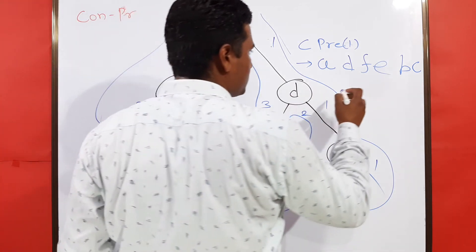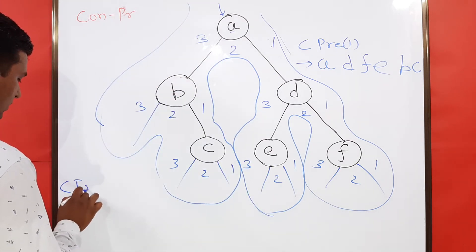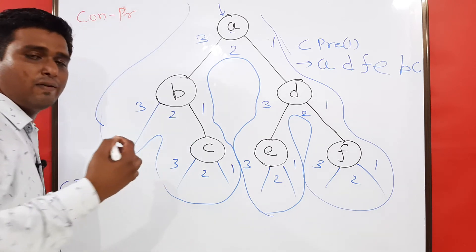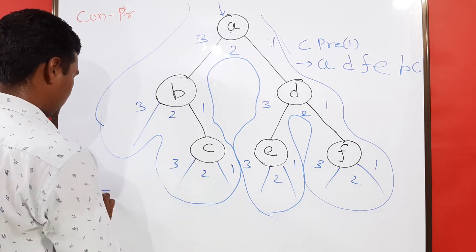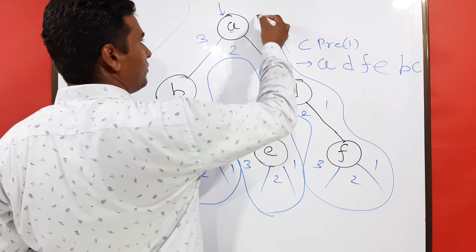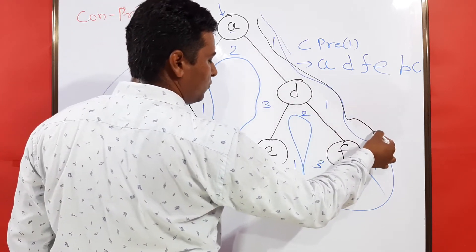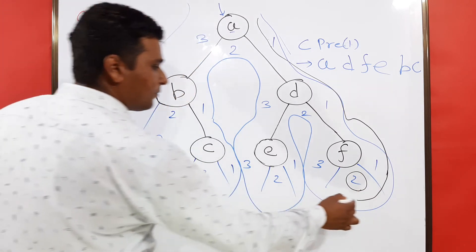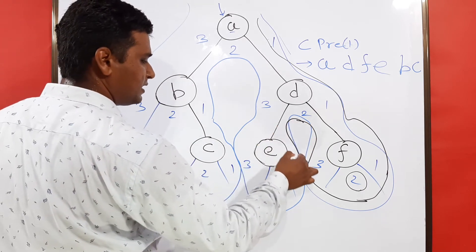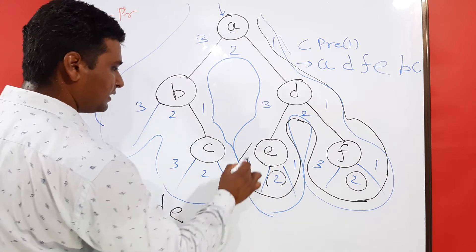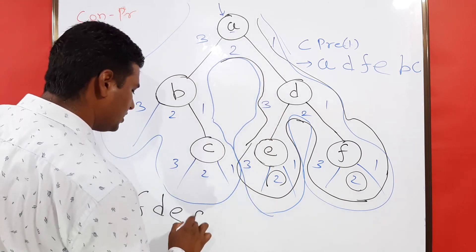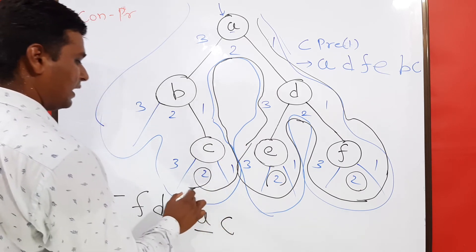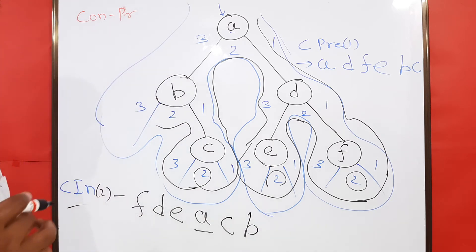Similarly we will find out what is converse in-order. I am writing the sequence. In in-order, we visit the root in the middle, so we start with number two. For converse in-order we visit two first. Starting with A — we don't want one, so we go to F for its two, writing F. Then D, then E because it has two. Then A — you can see A is in the middle, that is the root node. Then C because it has two, and lastly B. That is what is called converse in-order.